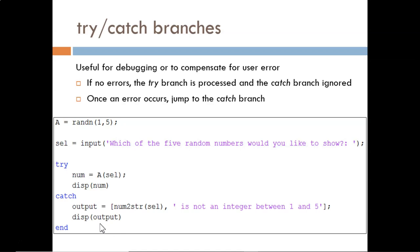In this simple example, we are compensating for user error. We created a list of five random numbers. Then we prompt the user to enter the index of the number they would like to see. If they choose a proper index, i.e. a whole number between one and five, then that particular random number will be displayed through the try branch, and the catch branch is ignored.